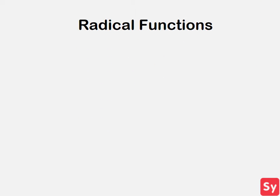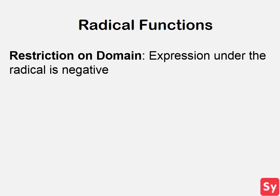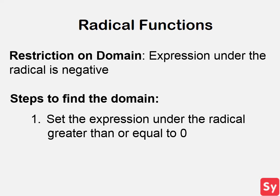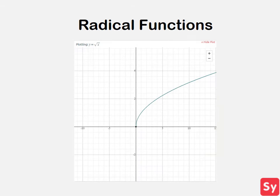Now we will talk about the domain of radical functions. Radical functions are real when the expression in the radical is not negative. In order to find the domain of radical functions, first set the expression under the radical greater than or equal to zero to find where the function is real. Next, solve for x to get the domain. Here is the graph of a radical function, square root of x. We can see that the function is not real when x is less than zero, since it is not part of the domain.